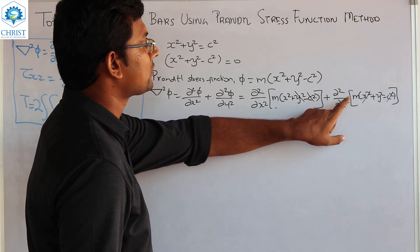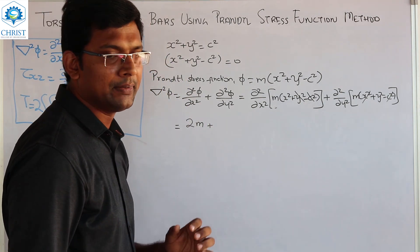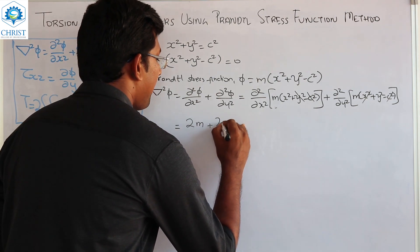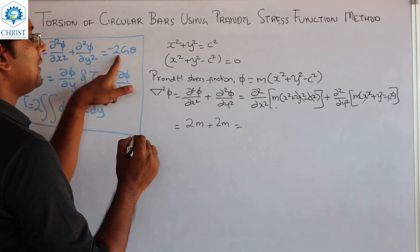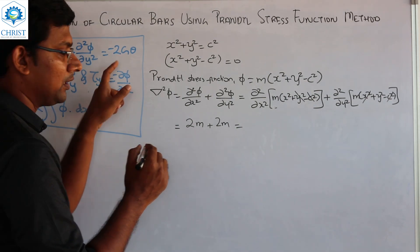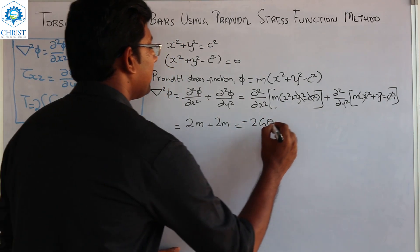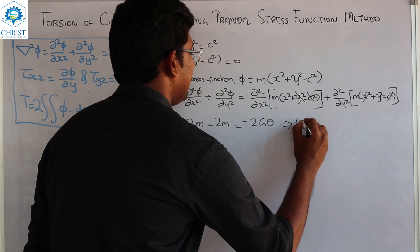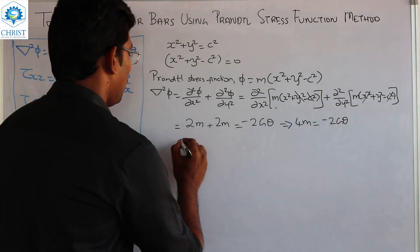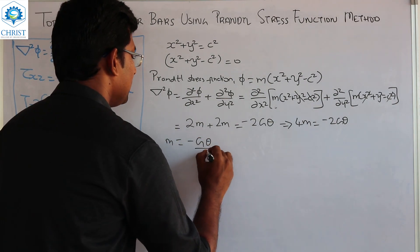So, ∂²/∂y² of m·y² gives first term 2y·m, so 2m. Therefore, 2m + 2m = −2Gθ for the Prandtl stress function method. This gives 4m = −2Gθ, or m = −Gθ/2.